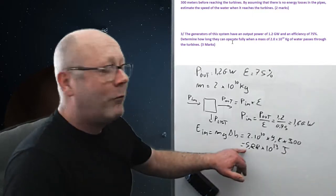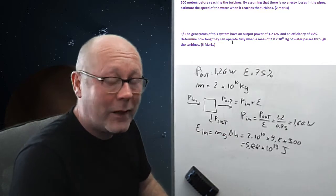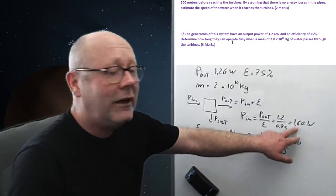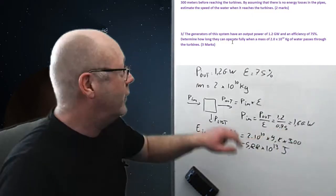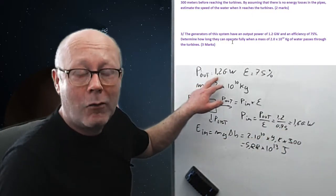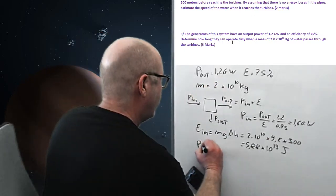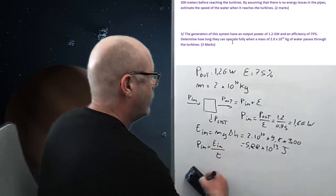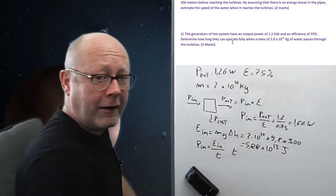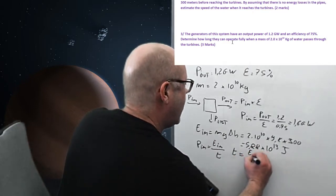So, that is 2 by 10 to the 10 by 9.8 by 300 meters. So, let's calculate this. And I find 5.88 by 10 to the 13 Joules. So, this is a pool of energy that we have. And every second, we need to give 1.6 GJ, 10 to the 9 Joules, for the system to hold this power out. So, the power in is actually the energy in divided by time. So, we can easily rearrange this. Time equals energy in divided by power in.